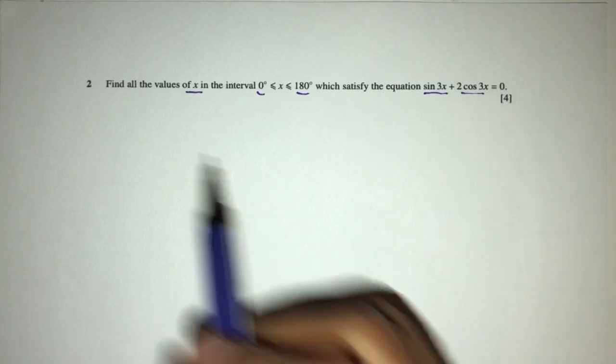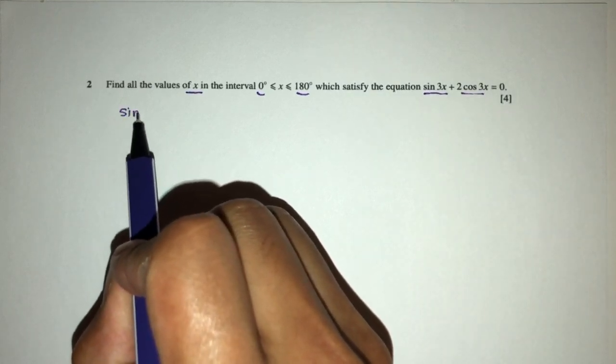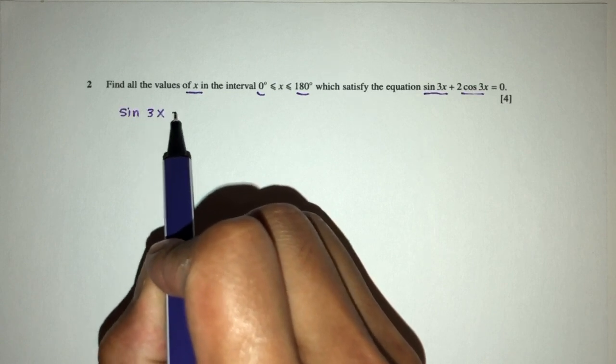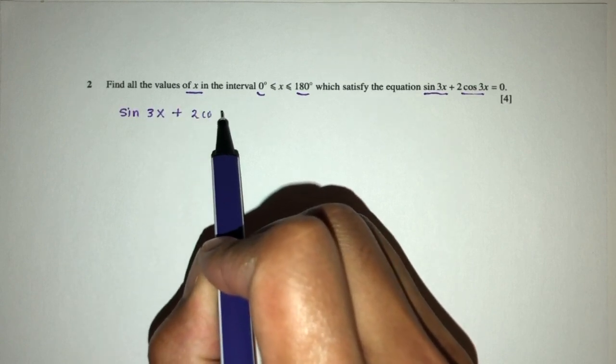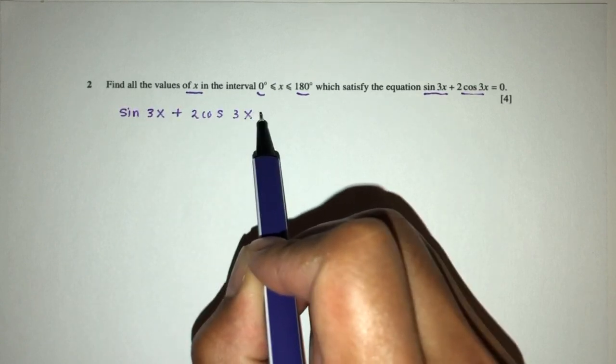So here we have sine 3x plus 2 cos 3x equal to 0.